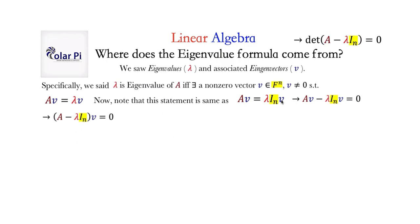Because what we can do next is put everything on one side, so this here equals zero. Then we can factor out V, and here is where writing I sub n between lambda and V was crucial. Once I factor V from the left-hand side, I get the matrix A minus lambda times I sub n, all times V, equals zero. For this expression to make sense, lambda times I sub n needs to be an n by n matrix just like A — we can only subtract matrices of the same dimension — which is exactly why inserting I sub n was so clever.